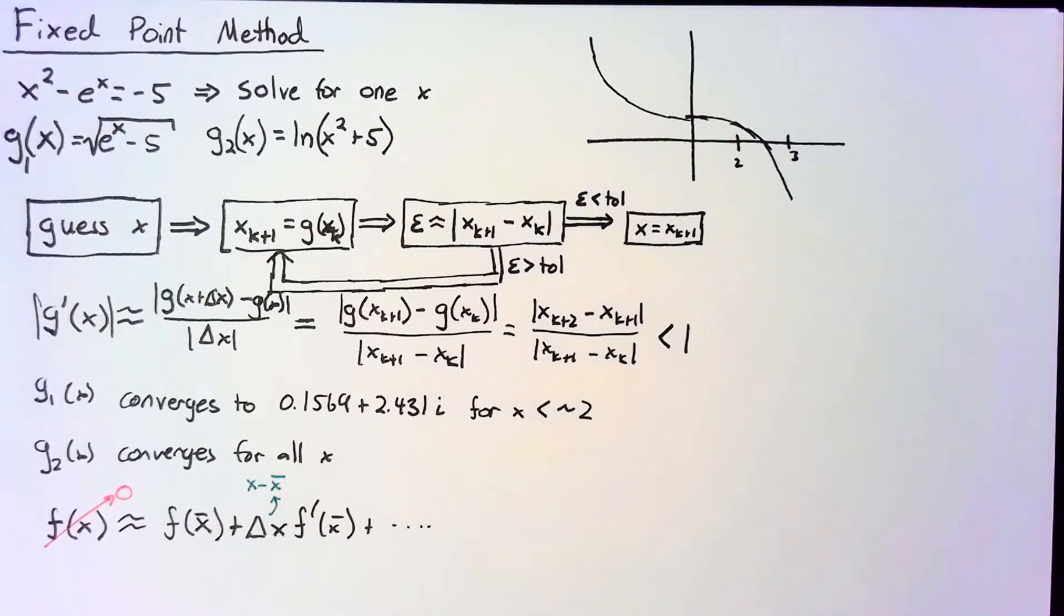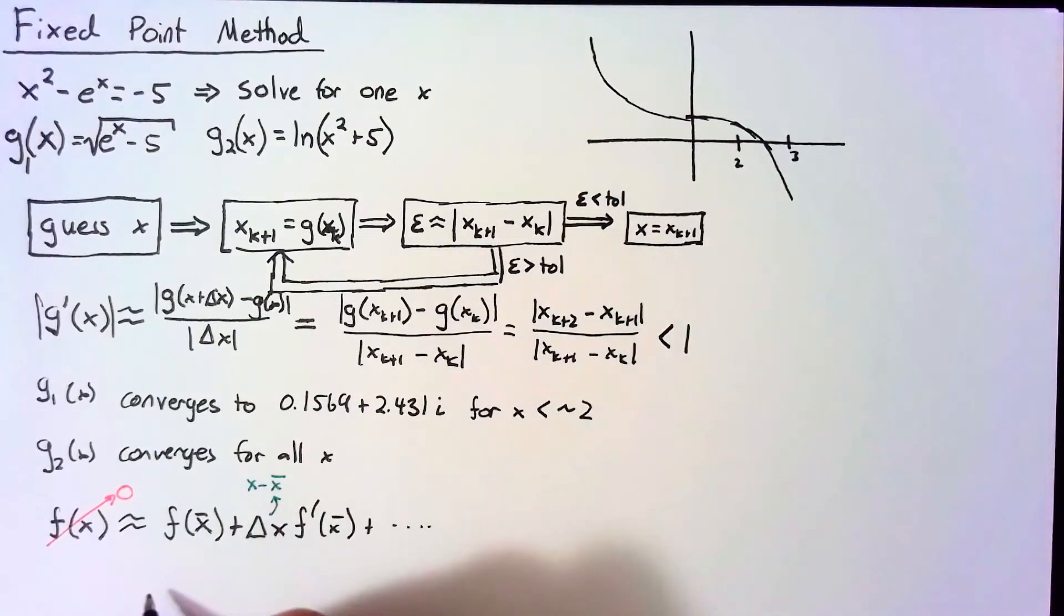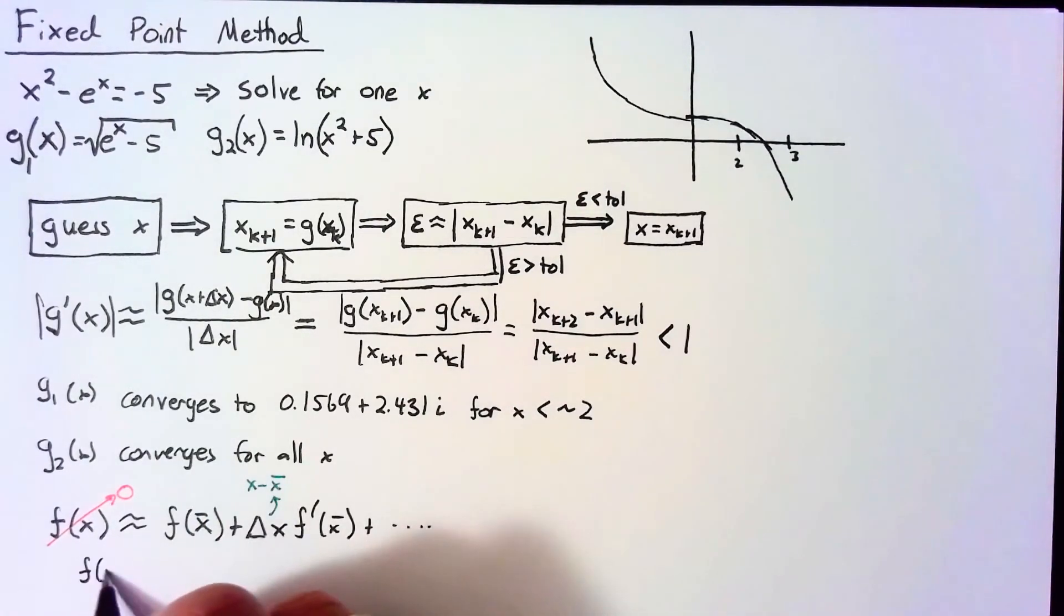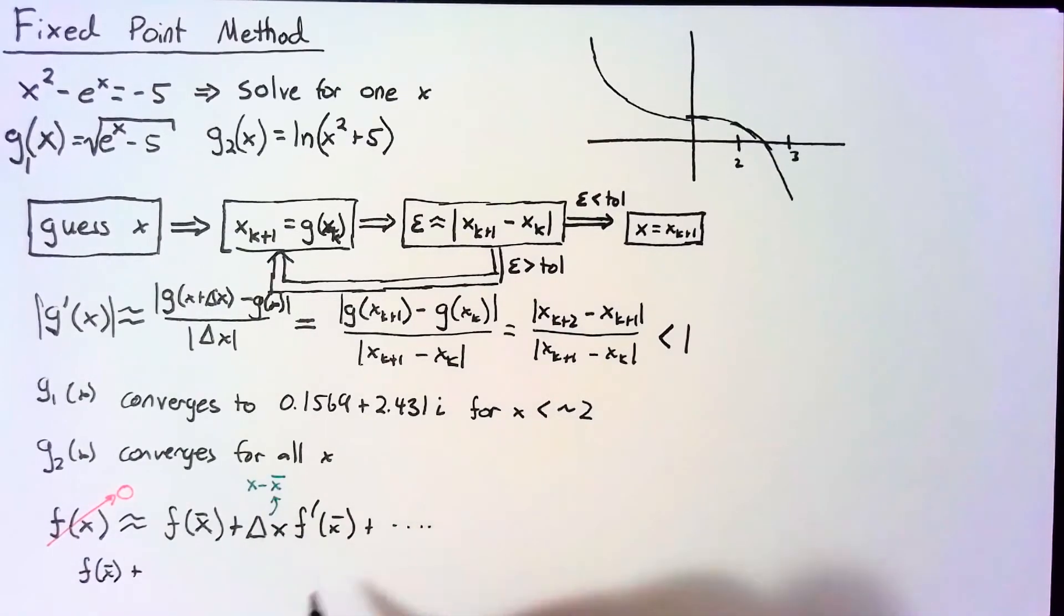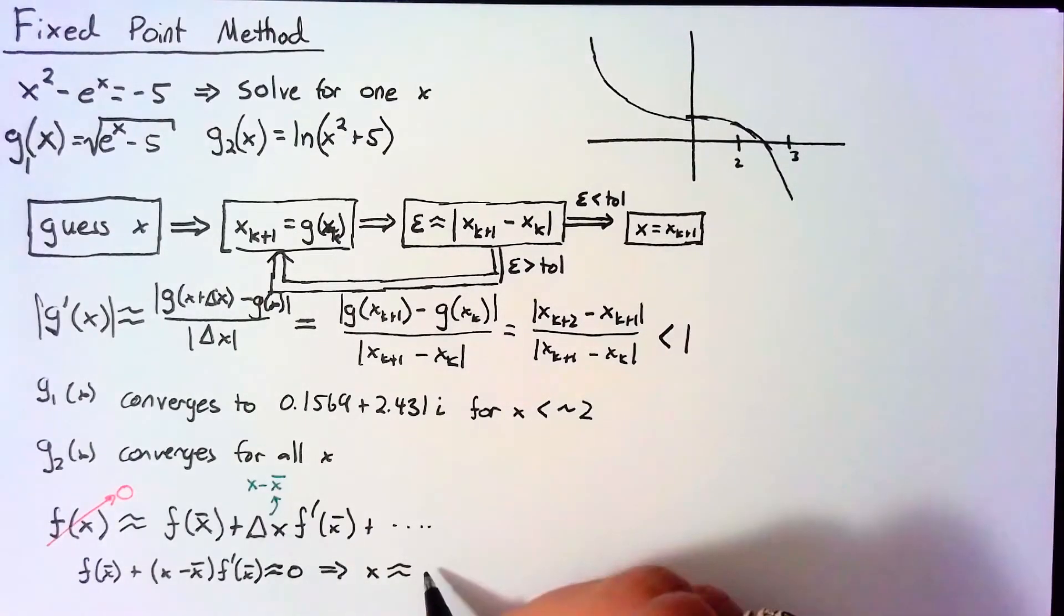Remember x̄ is going to be our current guess and x is what we're trying to find. That's going to be our next guess. So writing this out, f(x̄) + (x - x̄)f'(x̄) = 0. And solving for x yields x̄ - f(x̄)/f'(x̄).